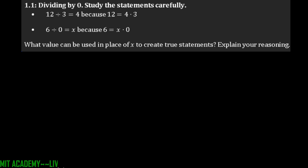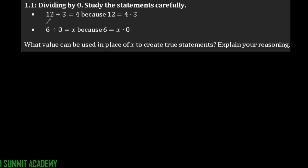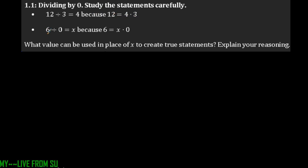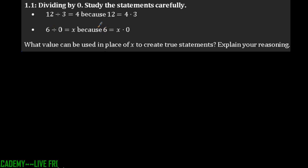For the first part, we're trying to divide by 0 — what happens? It says study the statements carefully. So it has 12 divided by 3 equals 4 because 12 equals 4 times 3. And then the second part says 6 divided by 0 equals x because 6 equals x times 0. What value can be used in place of x to create true statements? Explain your reasoning.